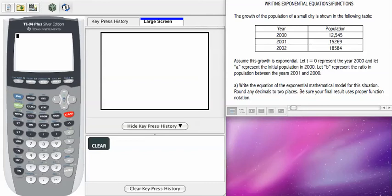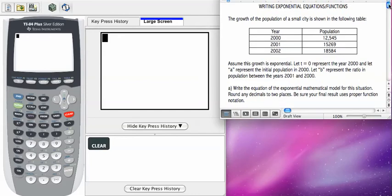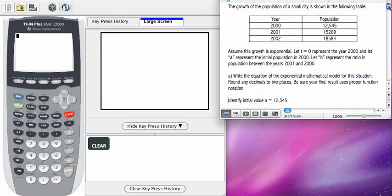The first thing we need to do is identify our value for A. Our value for A is our initial value, and we were told it's the population in 2000. So that's A equals 12,545 people.